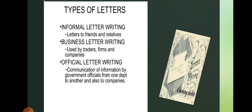First we will see the classification of letters, the types of letters. Informal letter writing — that is, letters to friends and relatives — are called informal letter writing. Business letters and official letters are both called formal letter writing. Business letters are used by traders, firms and companies. Official letter writing involves communication of information by government officials from one department to another and also to other companies.